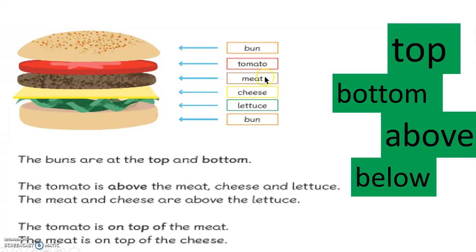We have the tomato, meat, cheese, and lettuce inside the bun. The tomato is above the meat, the cheese, and the lettuce.